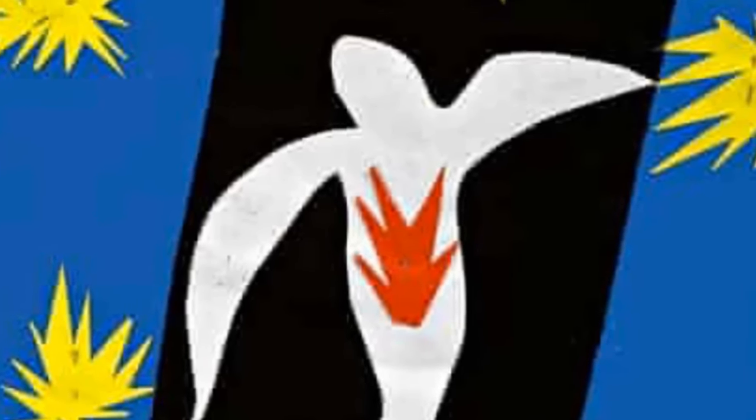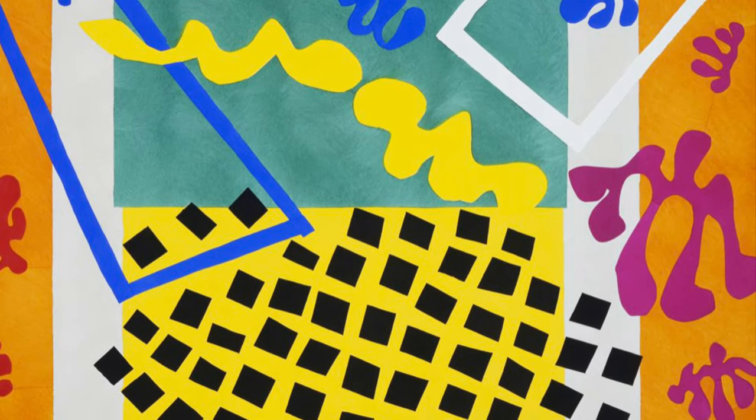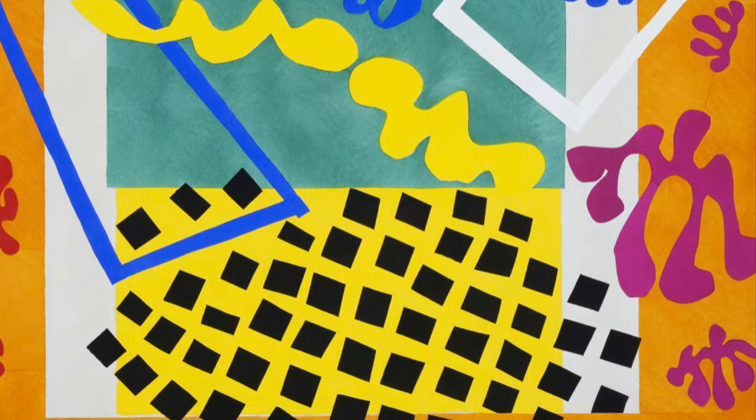Henri Matisse began to use collages as he got older. A collage is an art form gluing many pieces of paper together. Today we're going to create our own collage inspired by Matisse.